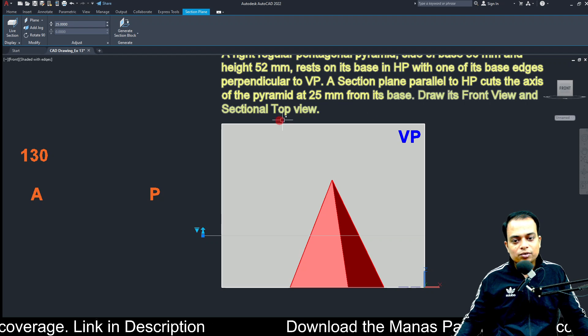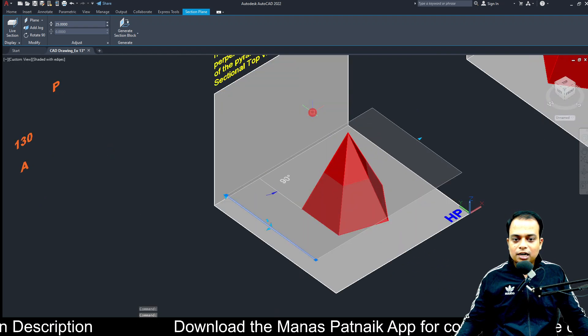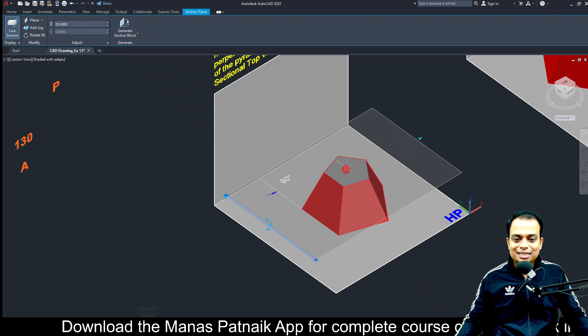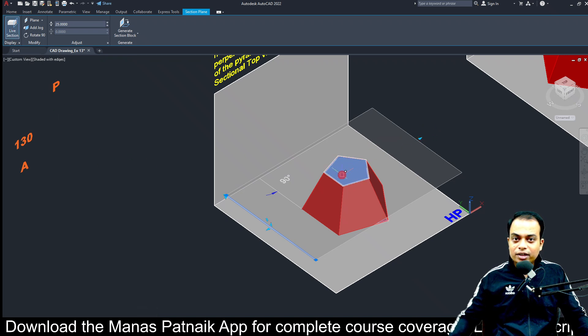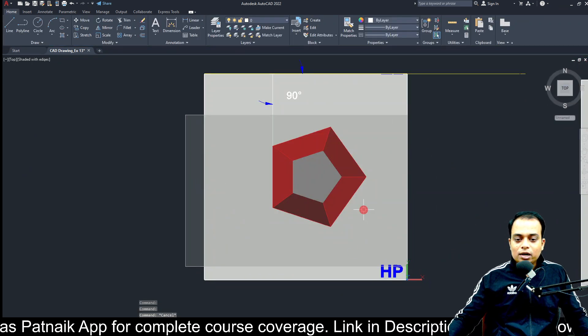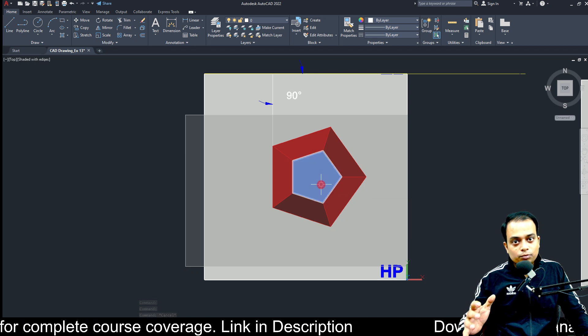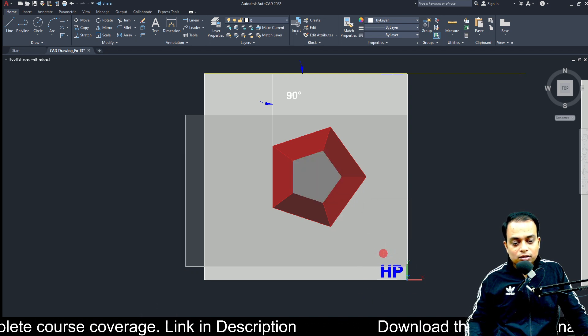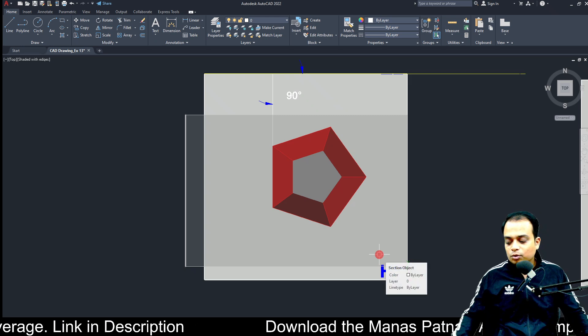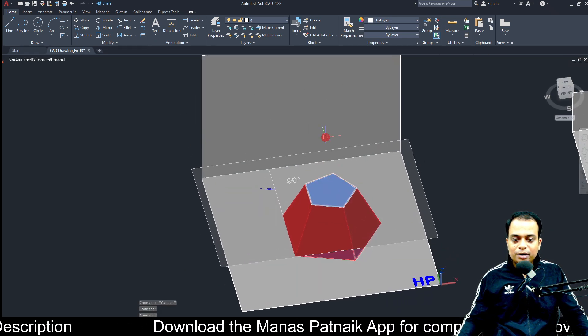We need to draw its front view and the sectional top view. One more thing which is very important - let me go for the live section mode. This is the section, and from where can you see the section? We can see the section from the top, and hence this qualifies as our sectional top view. Top view is always made on the horizontal plane.